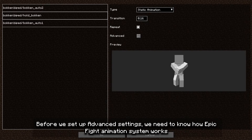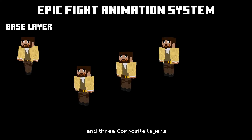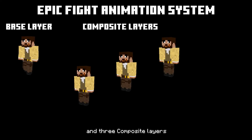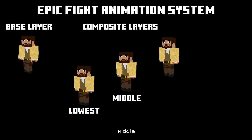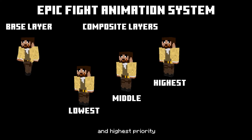Before we set up advanced settings, we need to know how the animation system works. The player pose consists of four layers: one base layer and three composite layers. Composite layers have the lowest, middle, and highest priority.